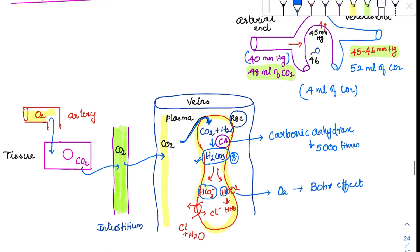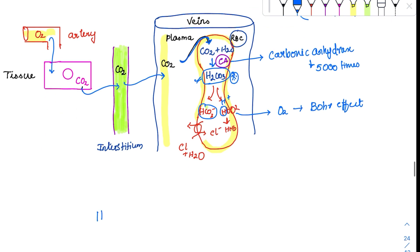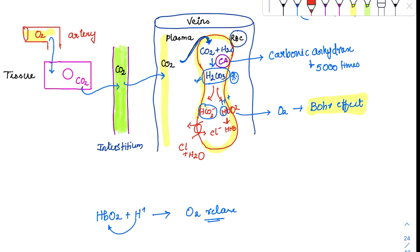The H⁺ formed will bind with hemoglobin. Hemoglobin was previously carrying oxygen, but now H⁺ comes and binds with it, causing O2 to be released to the tissue. Whenever there is high CO2 or high H⁺ leading to O2 release to the tissue, this is called the Bohr effect, which we already discussed.